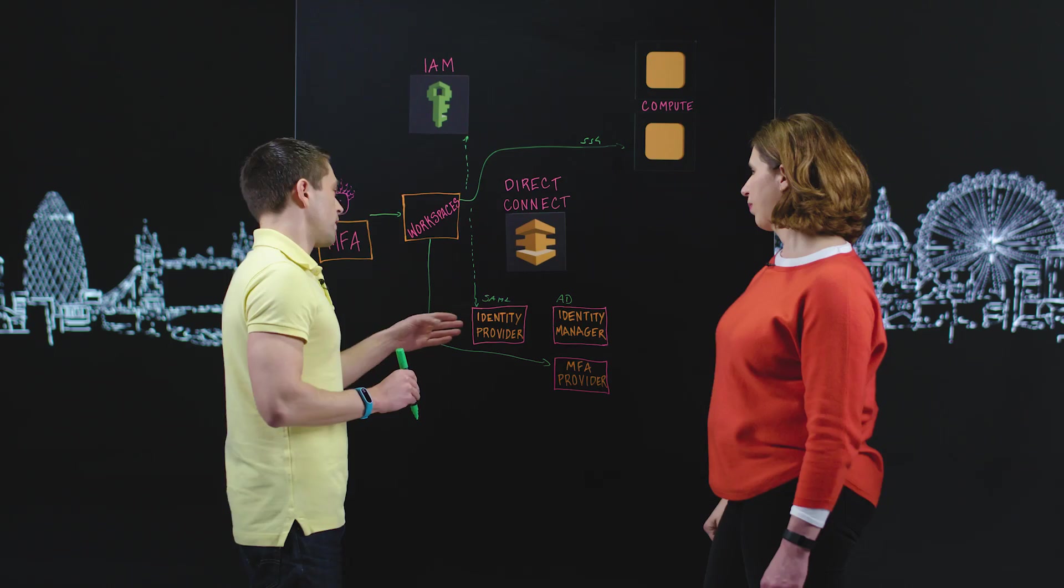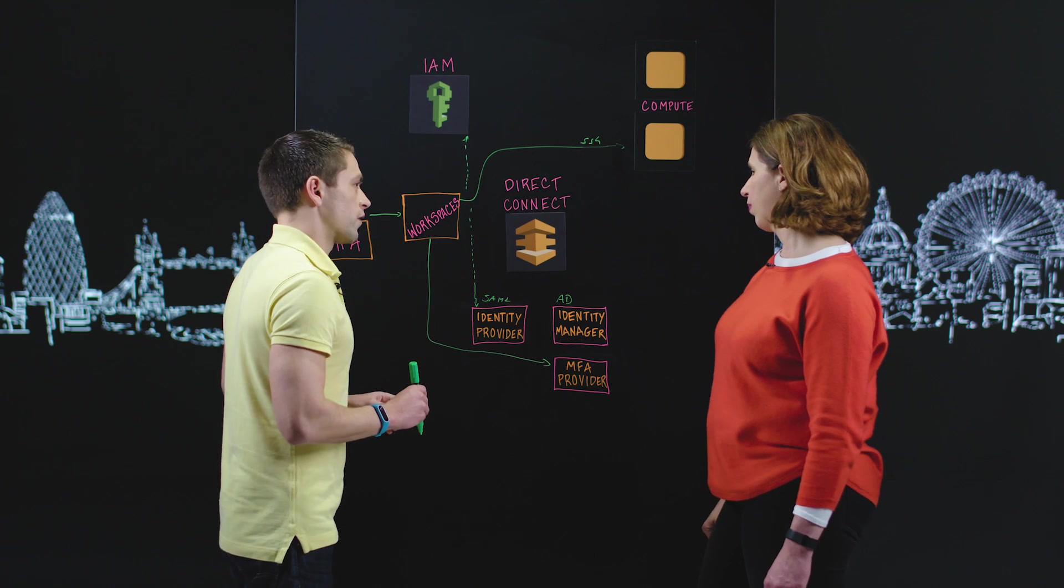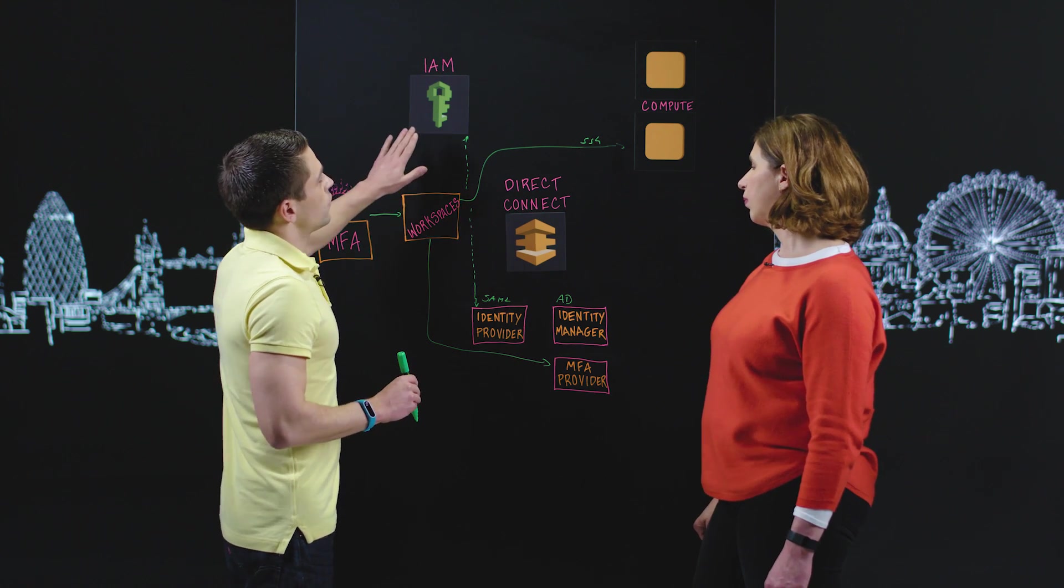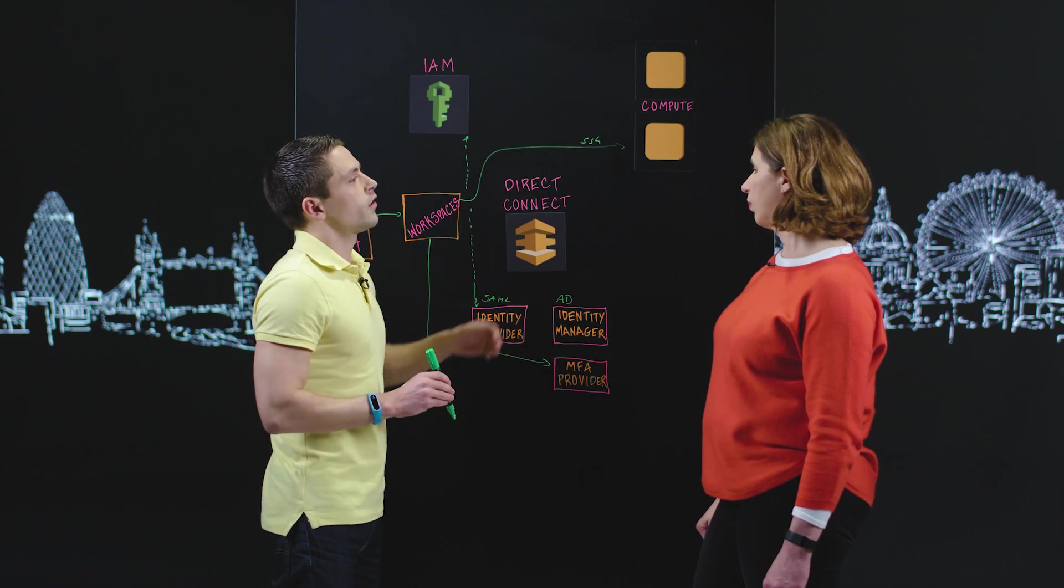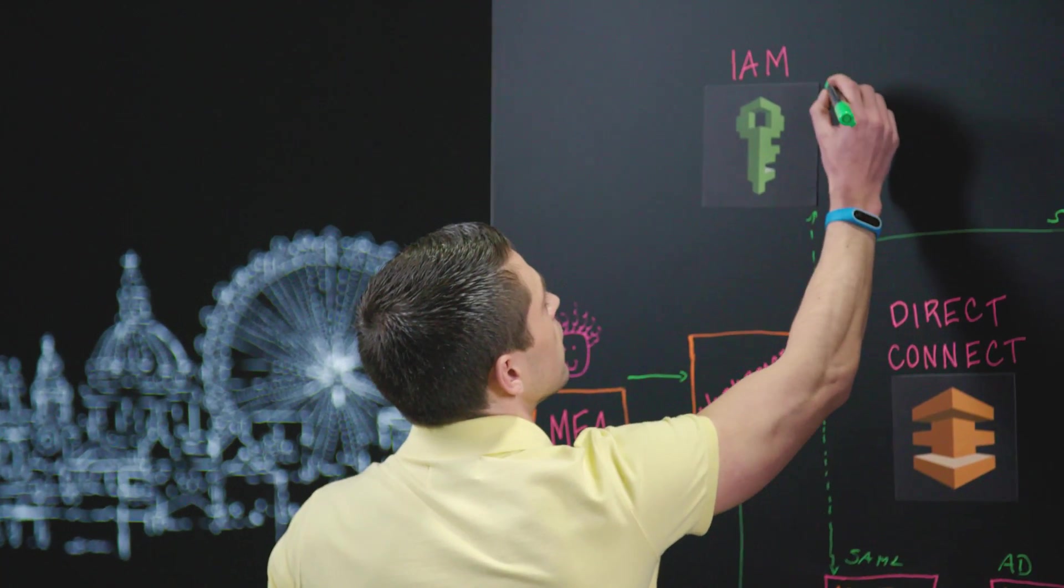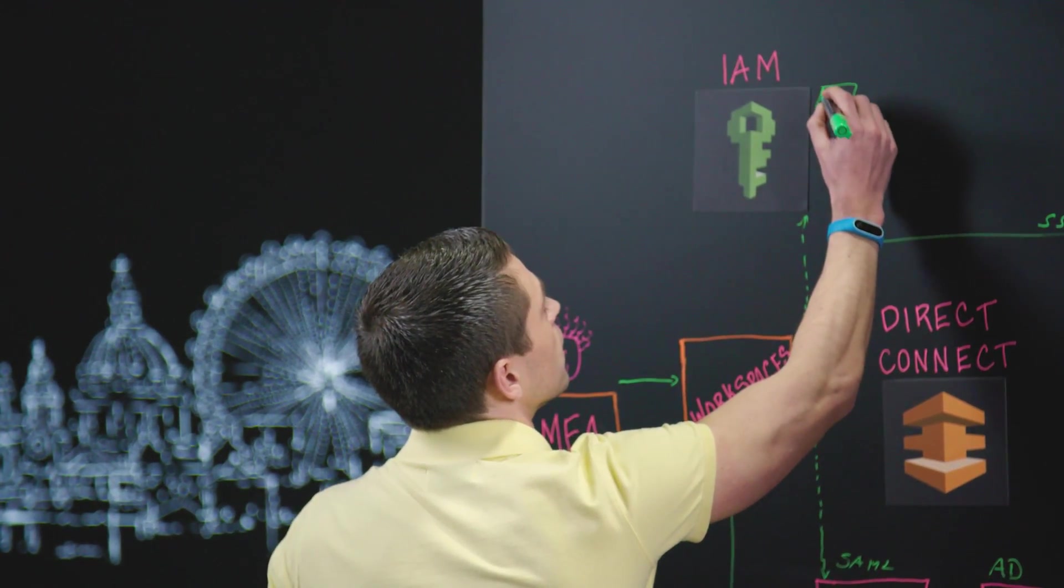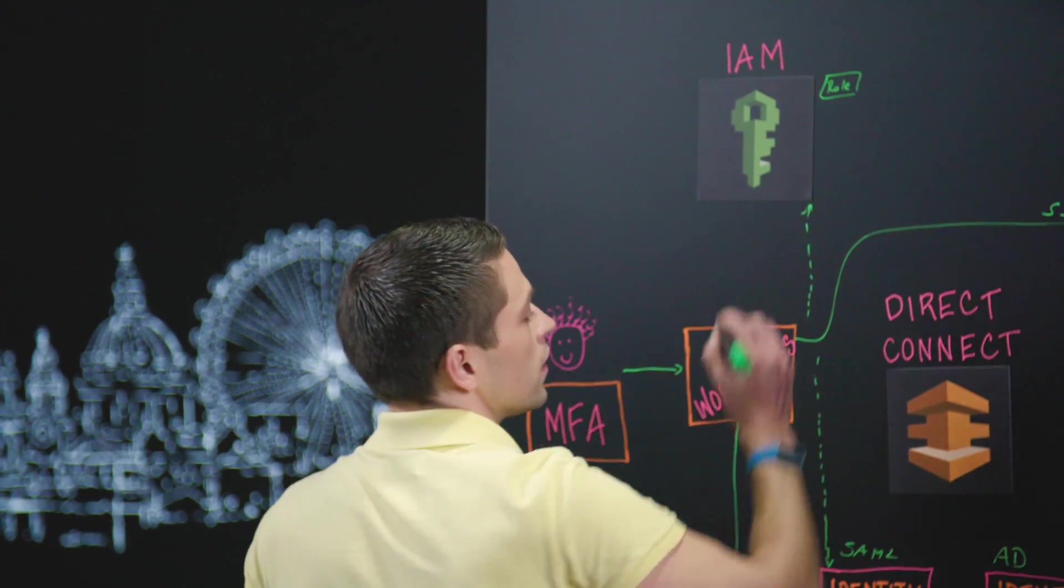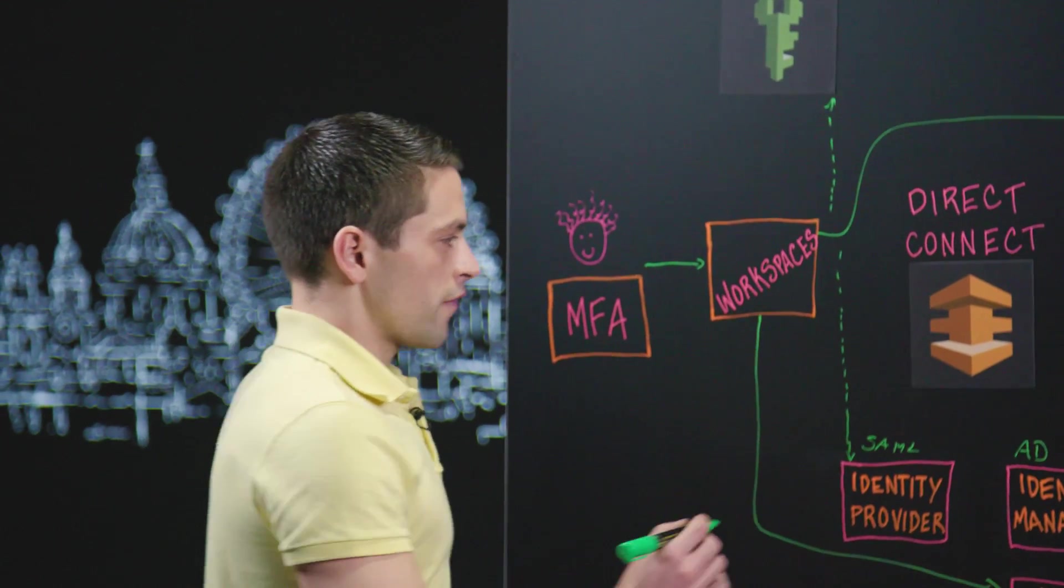So how are you actually connecting Active Directory to IAM? We've done that with groups we store in our Active Directory. So as soon as we create, for example, a new account in AWS, we have a new role in the central AWS IAM account. Okay. The same role we have in our Active Directory.